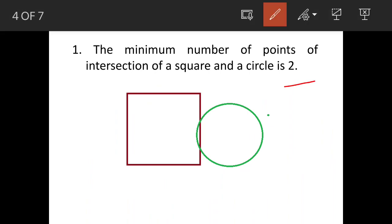You can try out here also. Let's draw a circle in the corner. So again you will find that minimum points are two. That means statement one is correct.